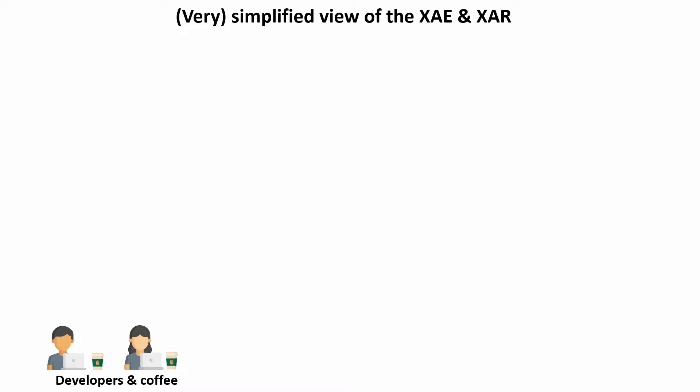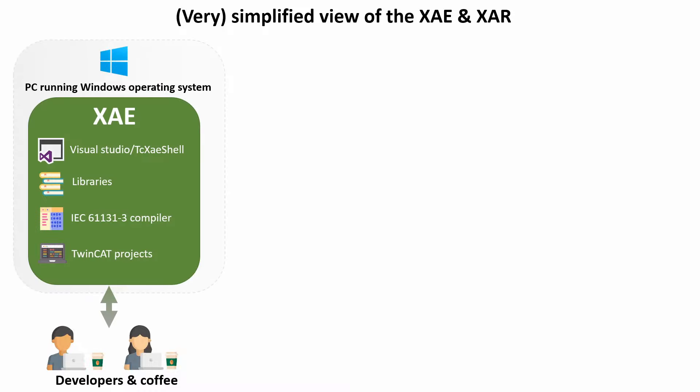TwinCAT 3 consists of two main parts. This is a simplified view of the XAE and XAR and the relation between them. First we have the XAE, which stands for Extended Automation Engineering, and this is the development environment for TwinCAT 3 software. It includes the integrated development environment based on Visual Studio, libraries for various functionality, and the compiler itself. It's with the XAE that you create, edit, and compile your TwinCAT 3 projects.